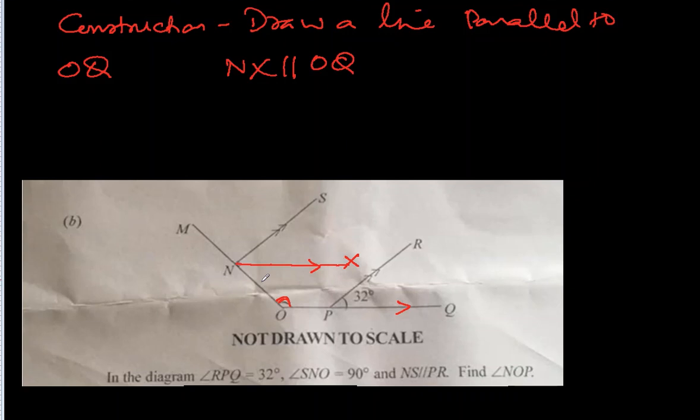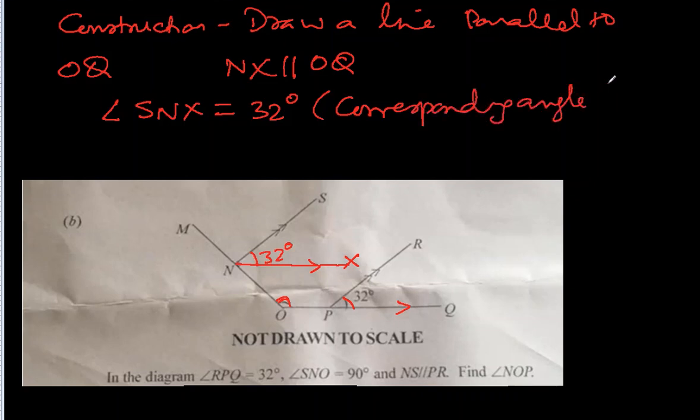Since they are parallel, this angle is going to be equal to 32 degrees. Isn't it? There are two parallel lines and these two are parallel lines. So this will also be 32 degrees. So we will write angle SNX is equal to 32 degrees. And it is corresponding angle to angle RPQ.